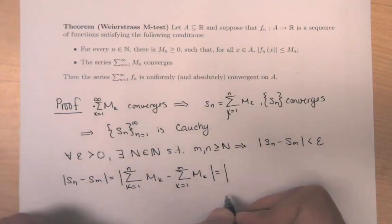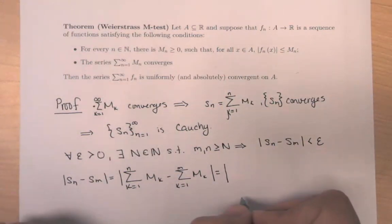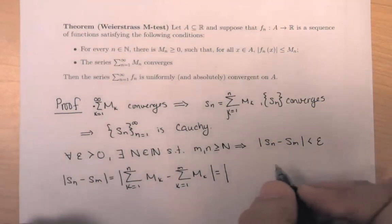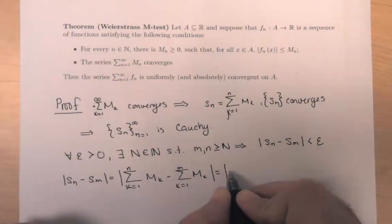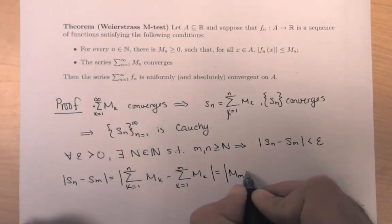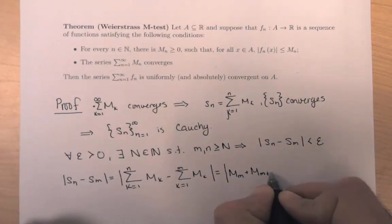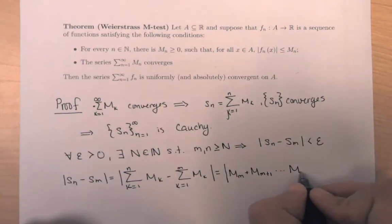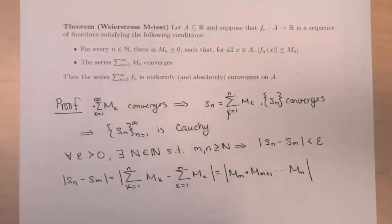Without loss of generality, suppose n is greater than m — of course one of them has to be bigger, and if they were the same the difference would be 0. Then S_n − S_m gives us m_{m+1} + m_{m+2} + … + m_n, because we're summing all terms from k = 1 to n and subtracting the first m terms.